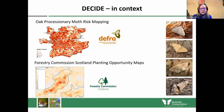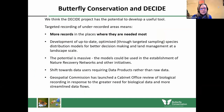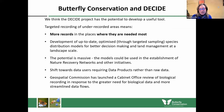So the Decide project can help remedy this — recorders will be nudged into new places to record, a bit like how Amazon recommends books based on your past purchases. Because you like recording in woodlands, it might say: why don't you go to this woodland? We need some records here. Targeted recording in underrecorded areas means we get more records in the places we need the most. We can develop up-to-date, optimised species distribution models to make better decisions about land management at a landscape scale, and the potential is absolutely massive — the models could be used in establishing nature recovery networks and other initiatives. There's also a massive shift towards data users requiring data products rather than raw data.